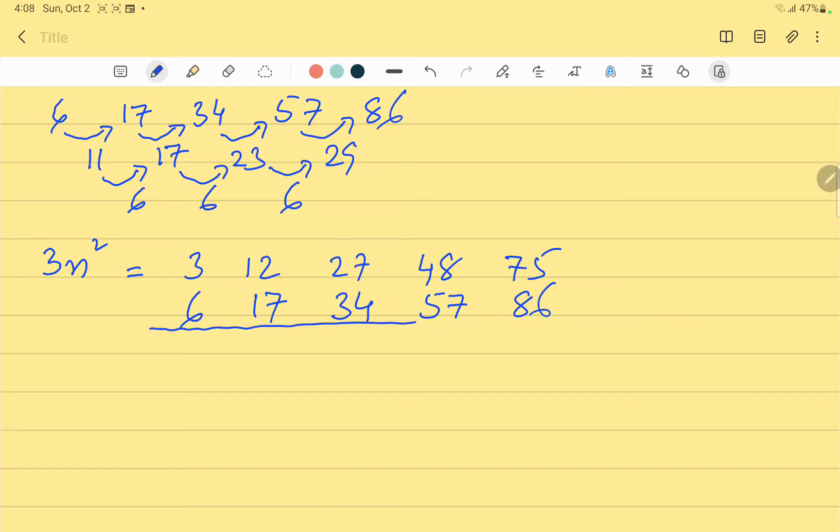Our answer is: 6 minus 3 equals 3, 17 minus 12 equals 5, 34 minus 27 equals 7, the next one is 9, and the last one is 11. Let us call this Series 1.